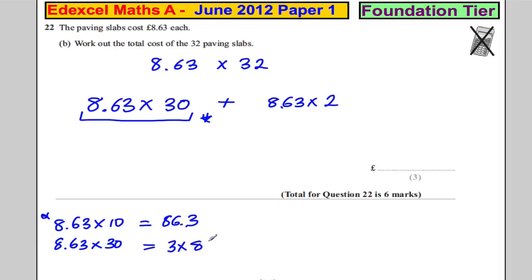So it would be 3 times 86 pound 30. Now, 3 times 80 is 240. 3 times 6 pound is 18 pound. And 3 times 30 pence is equal to 90 pence. So this would be equal to 258 pounds and 90 pence. So this bit would be 258 pounds and 90 pence.